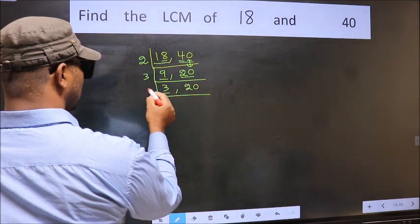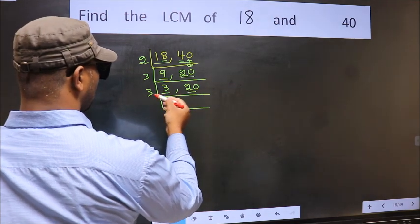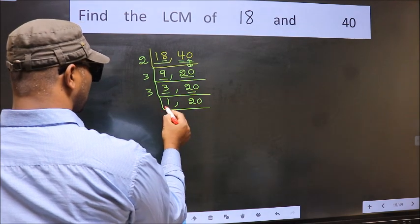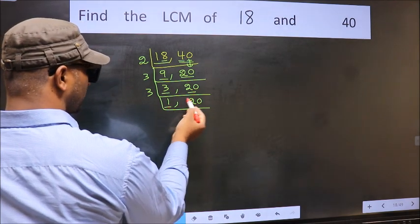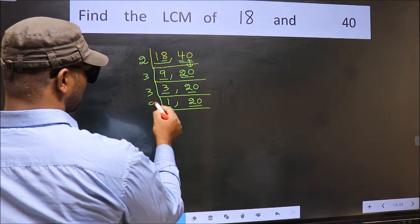Now here we have 3. 3 is a prime number, so 3 ones 3. The other number 20 not divisible by 3, so we write it down as it is. Now we got 1 here, so focus on the other number 20. 20 is 2 tens 20.